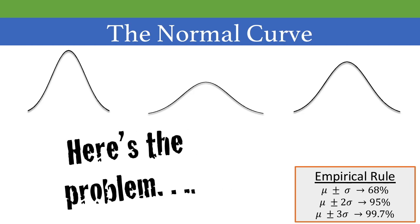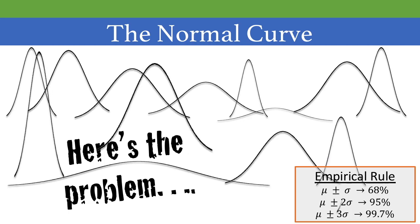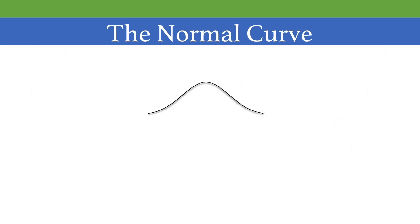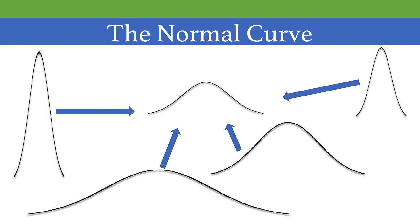But here's the problem. There are an infinite number of normal distributions floating out there in the universe with different means and different standard deviations. Calculating the probability for every single data set would be a nightmare. So some really smart mathematicians thought if we could have just one bell curve, it would be easier. And somehow any other bell curve that came along would just point back to that one. So that's what they did.